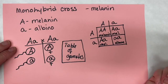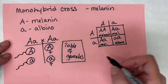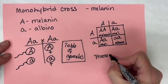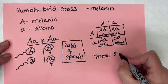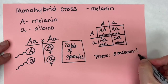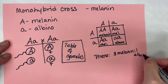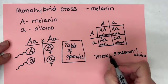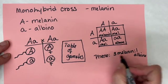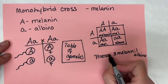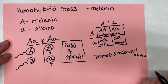The last step is to write out the phenotypic and genotypic ratio of the offspring. The phenotypic ratio would be three melanin to one albino. I ran out of room a little bit there, but that's okay. I also noticed I put a colon in the wrong place — when doing ratios, you need the colon in the right spot, so maybe we'll use arrows instead. That's a little bit nicer.